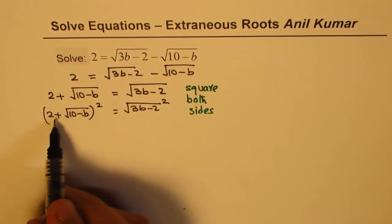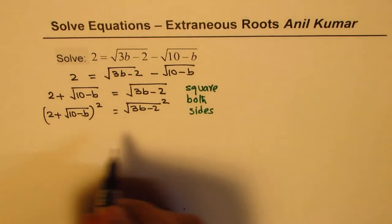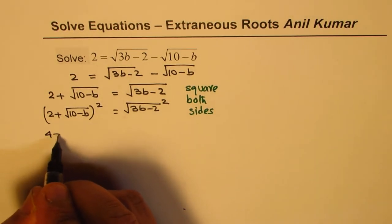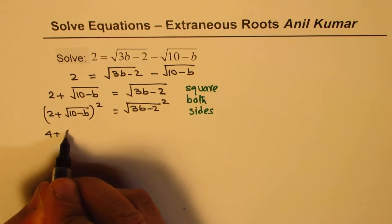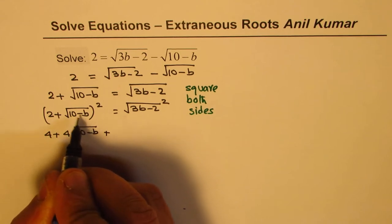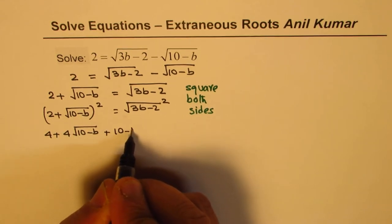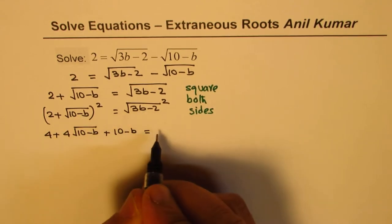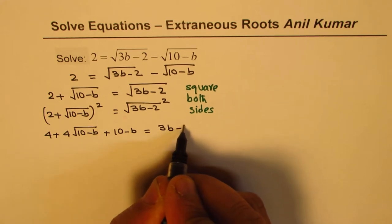You can expand this using a plus b whole square. So you get 2 square which is 4 plus 2ab which is 4 times square root of 10 minus b plus 10 minus b square root which gives you 10 minus b. On the right side you get 3b minus 2.